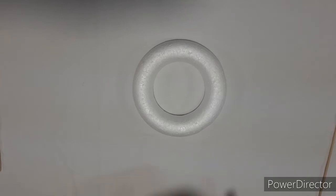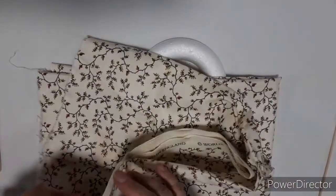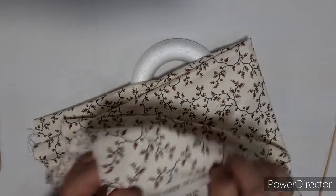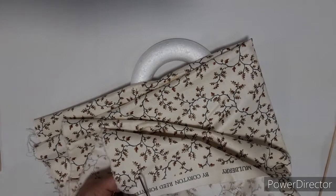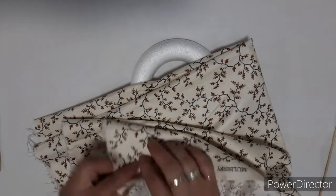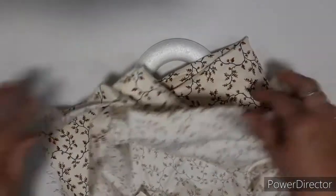So the first thing we need to do is take the polystyrene ring and we're going to cover it with some of the material. To start with we're going to take a strip of the material, start by making a snip down and then we're actually going to rip a thin strip off the edge of the material.